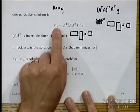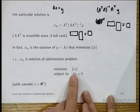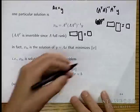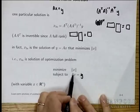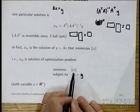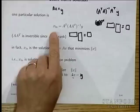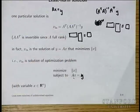x least norm essentially solves this optimization problem: among the vectors that satisfy Ax equals y, take the one of minimum norm. The solution is unique and it is given by x least norm.